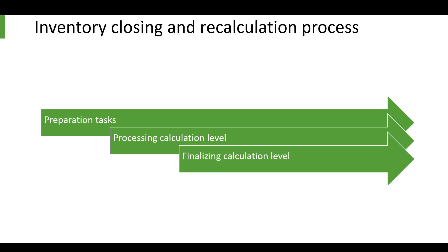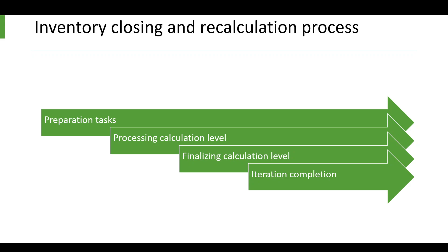Then the system will move to the finalizing calculation level step. Here the system checks if there are more levels to be processed — if so, it will bundle the items once again and calculate that bundle. Then it moves to iteration completion, where it checks if items need to be recalculated; if so, items will be bundled, recalculated, and the iteration marked as complete. If no items need recalculation, the system moves to posting to ledger, where transactions are posted to the ledger accounts.